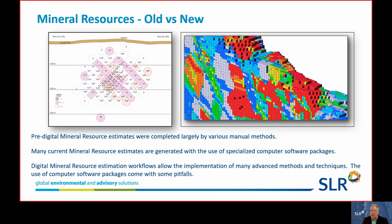On the left, we have an example of the way we used to do mineral resources back in the day before computers, in the pre-digital age, before we even had mineral resources. There you can see an example of a polygonal resource estimate in longitudinal view, but we used various manual methods for preparing mineral resources back then. These days, many computer mineral resource estimates are generated with specialized computer software packages, and there in the image on the right is an example of a block model that is color coded by grade — a clear difference in approaches between those two methods and vintages of technology.